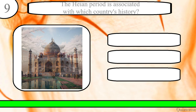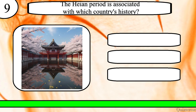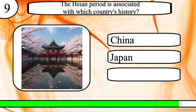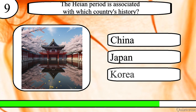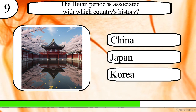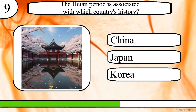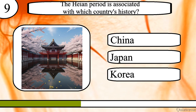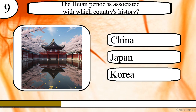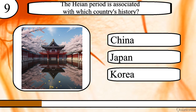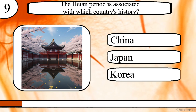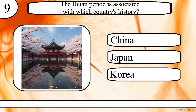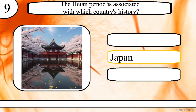Question 9. The Heian period is associated with which country's history? China, Japan or Korea? The correct answer is Japan.